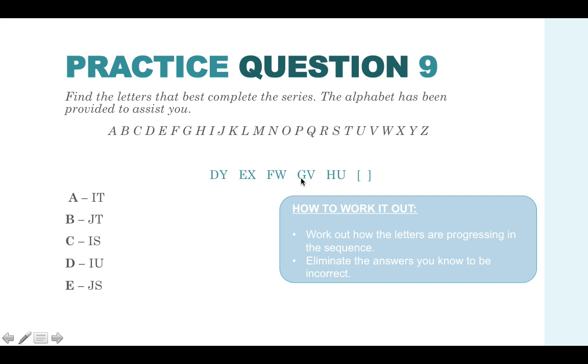Work out how the letters are progressing in the sequence. As you can see, the first letters in each pair is going up in the alphabet one space each time. So it's got D, E, F, G, H. So you know the next one's going to start with I. So you can automatically eliminate B and E. And then let's see how the second group of letters are going. We can see that they're working one step backwards. So we go Y, X, W, V, U. So the next one would be T. So you know that the first part would be I and the second letter is T. So your answer is A.